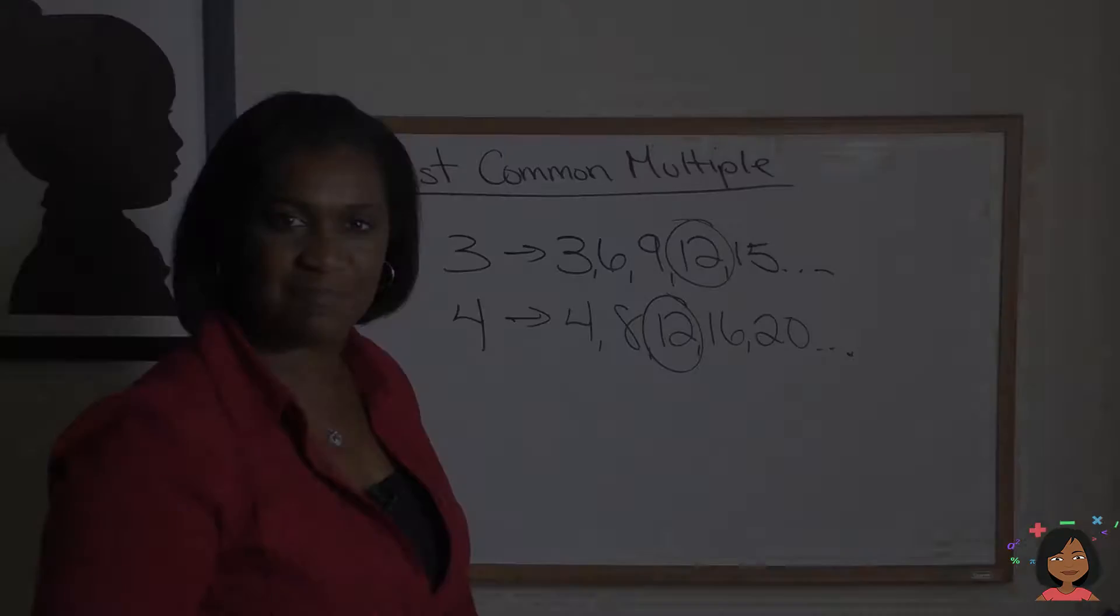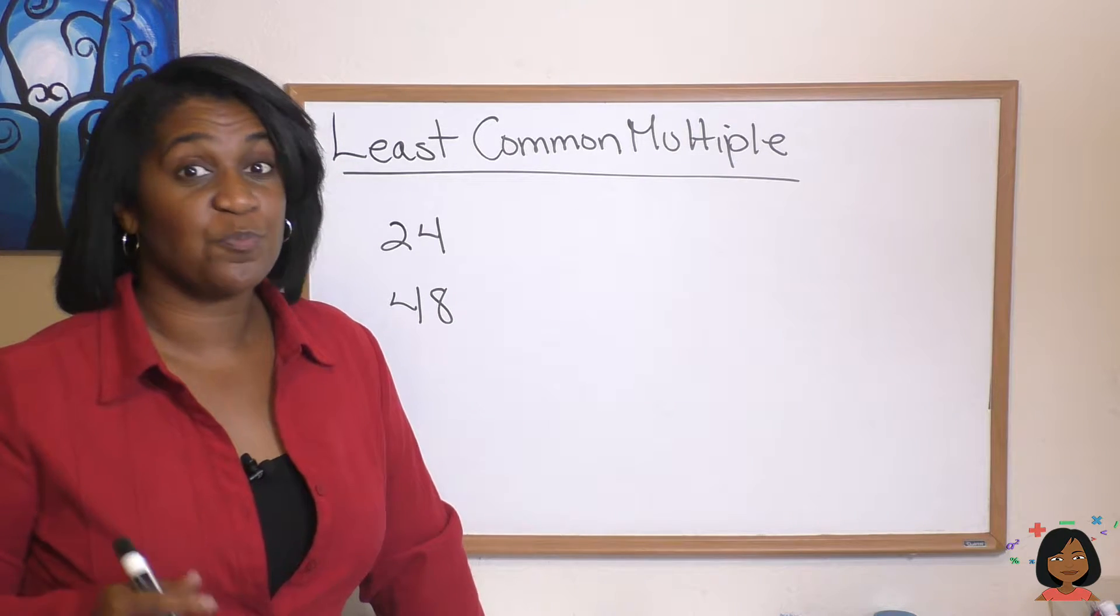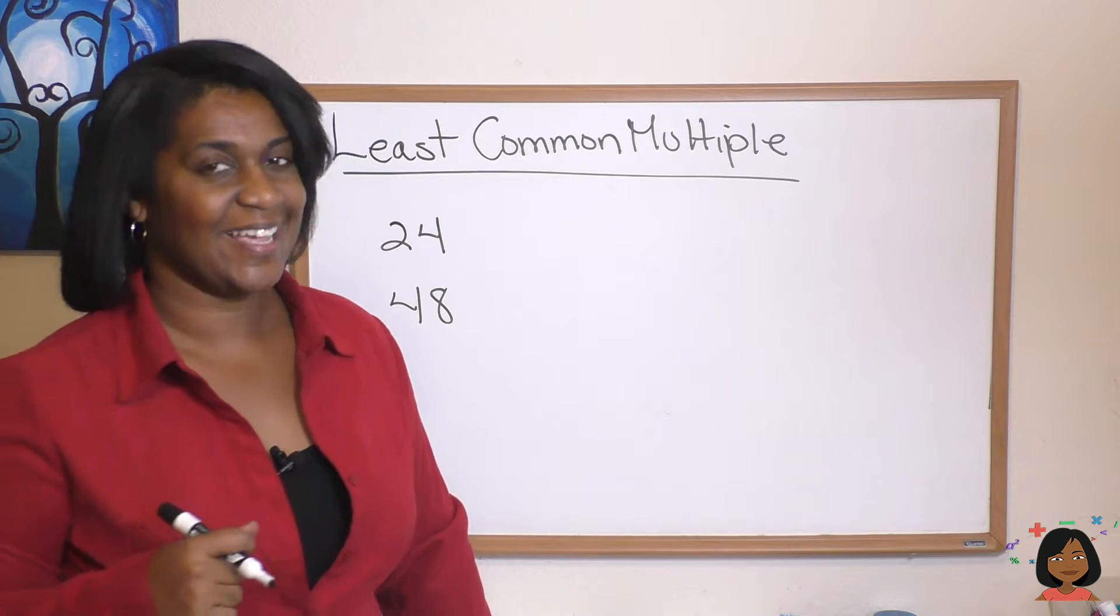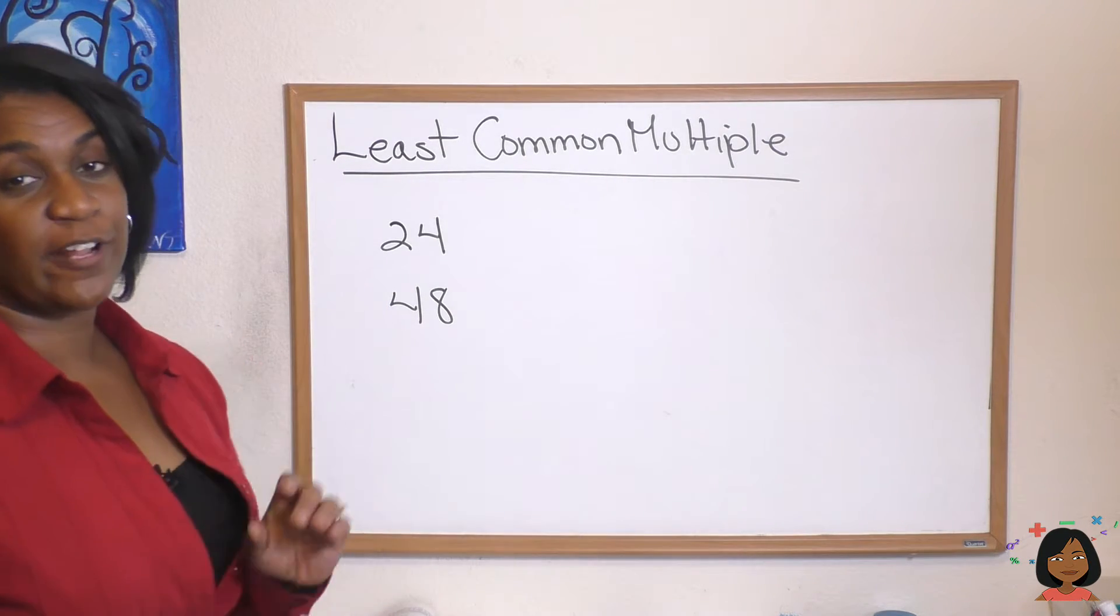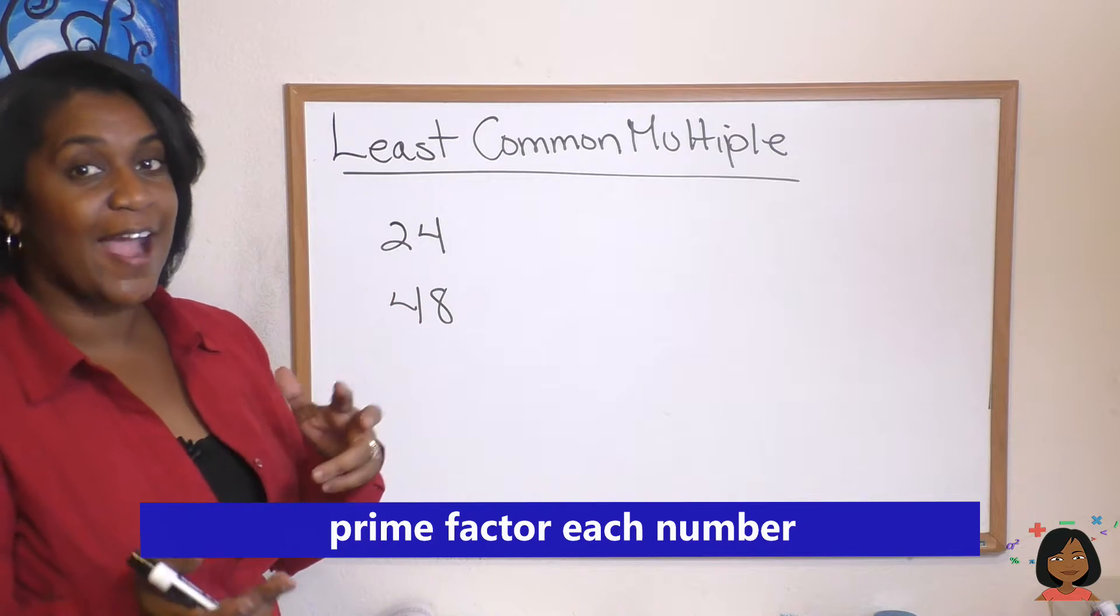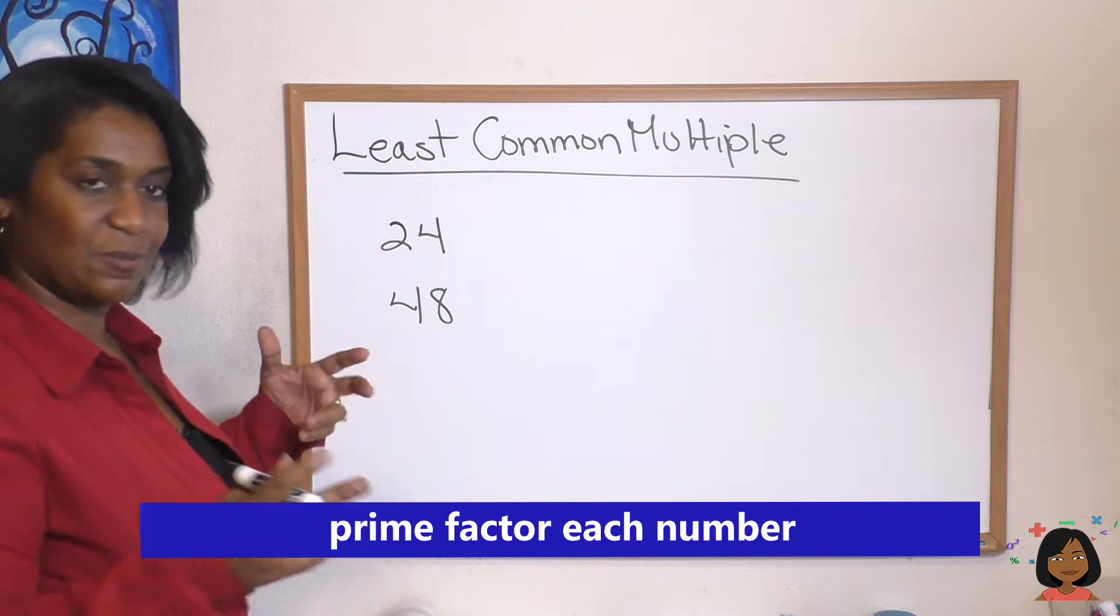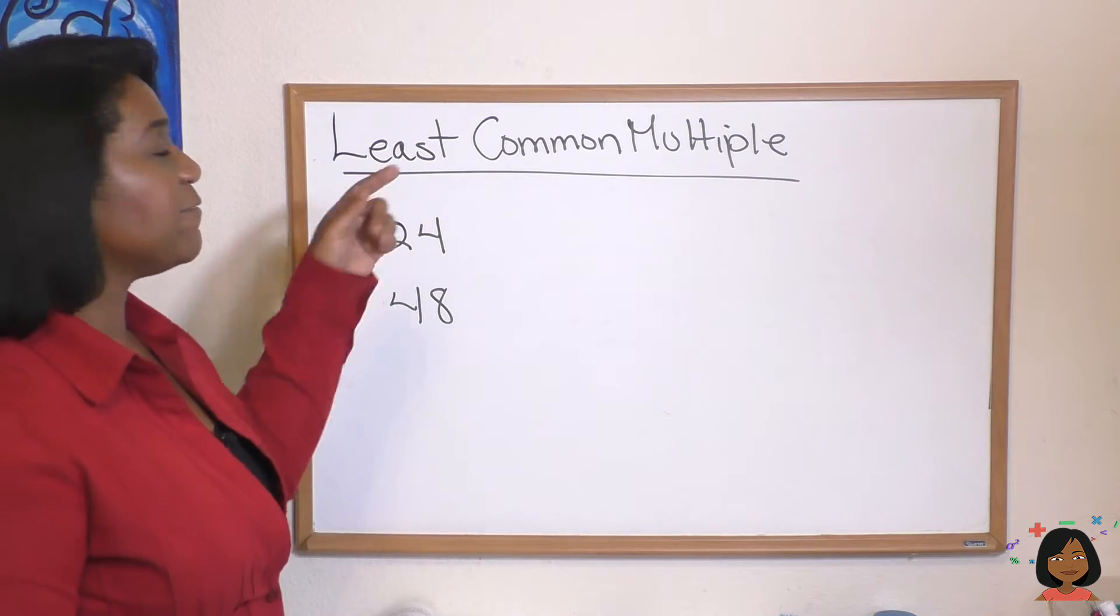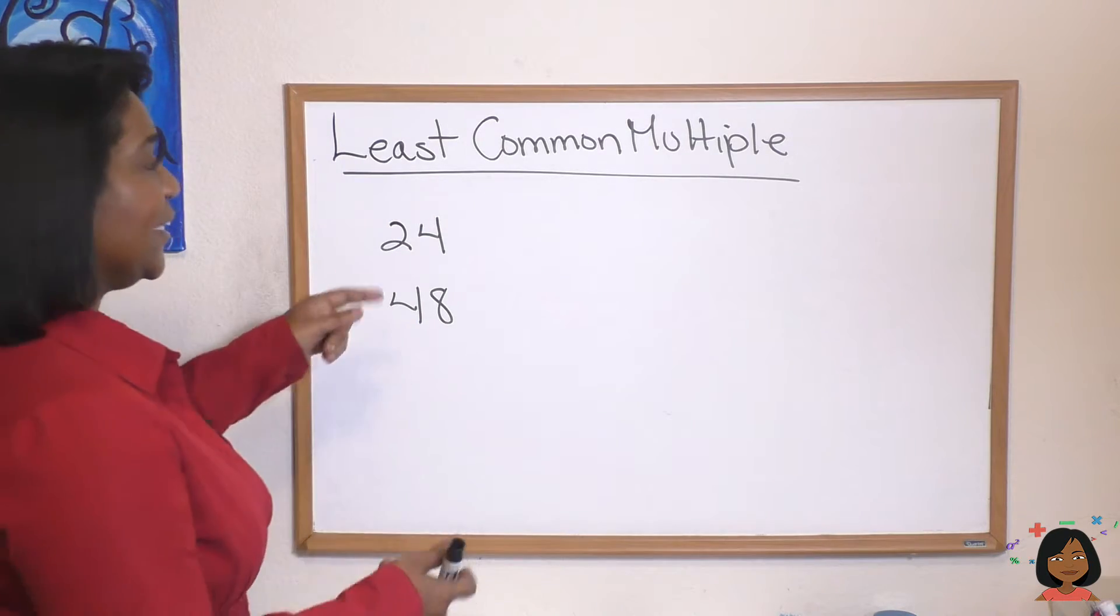Did you also know that you can use prime factorization to find the least common multiple? Take a look. So I've got two numbers here: twenty-four and forty-eight. I'm going to prime factor using factor trees—that's what I like to use—both of these numbers, and then we will see how we can find the least common multiple. Let's start with twenty-four.